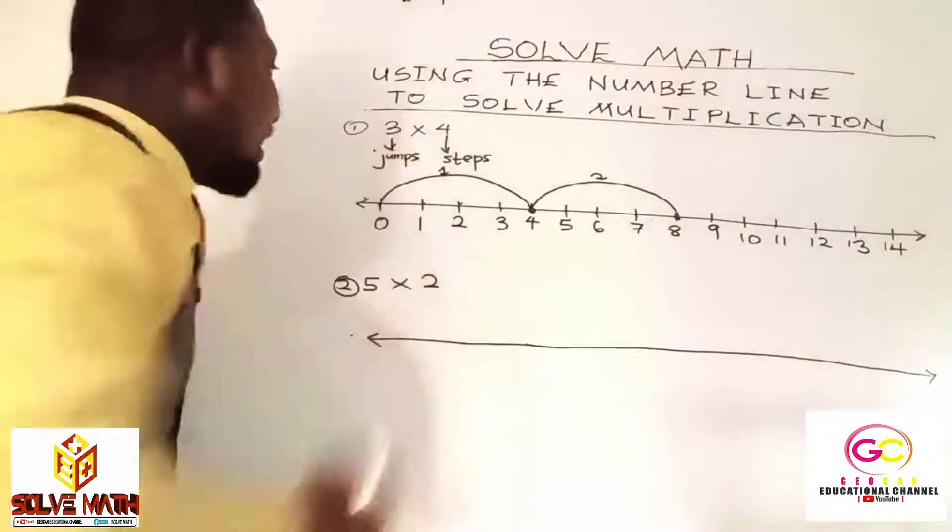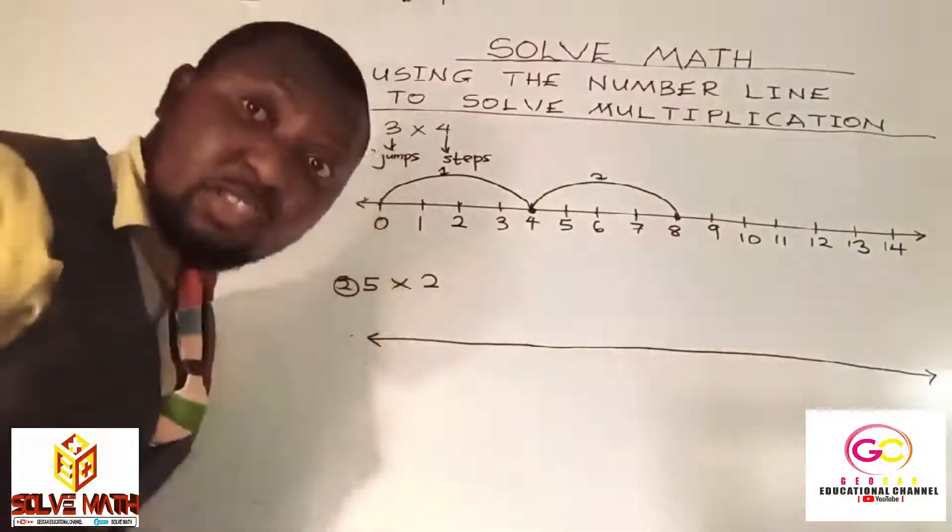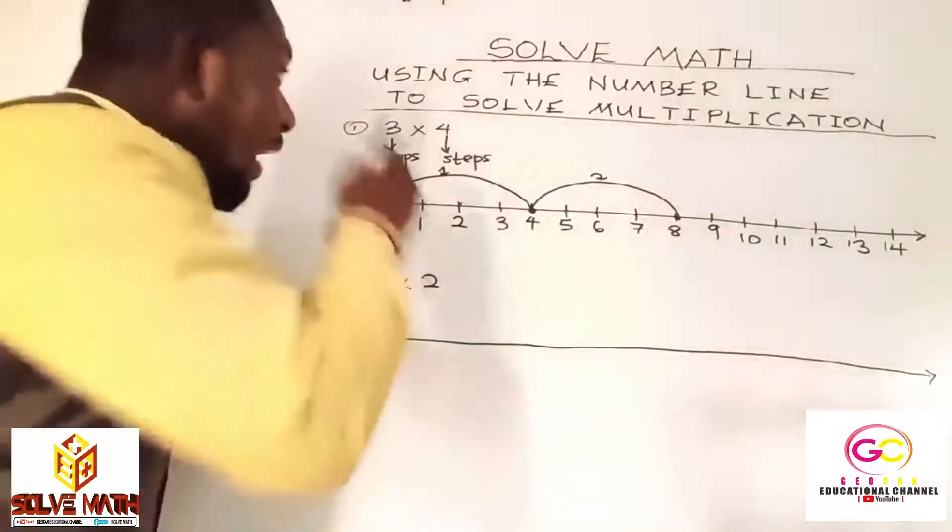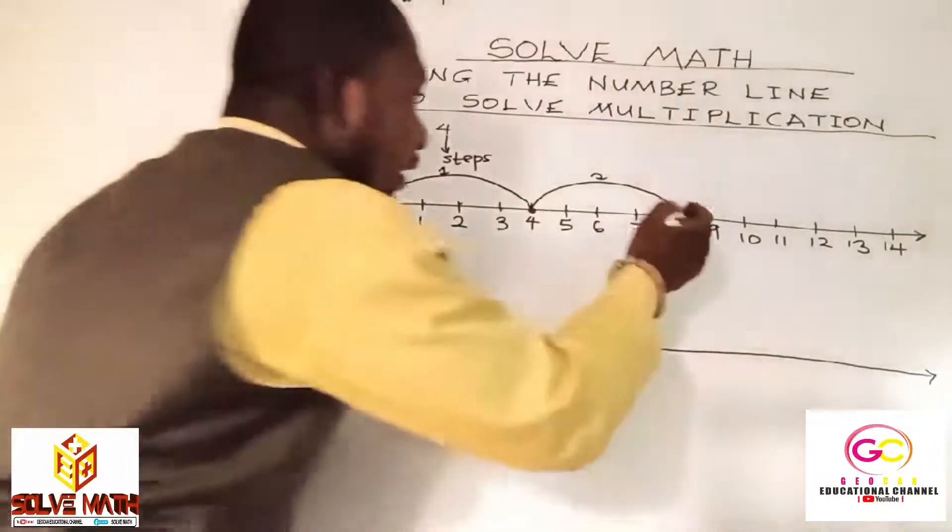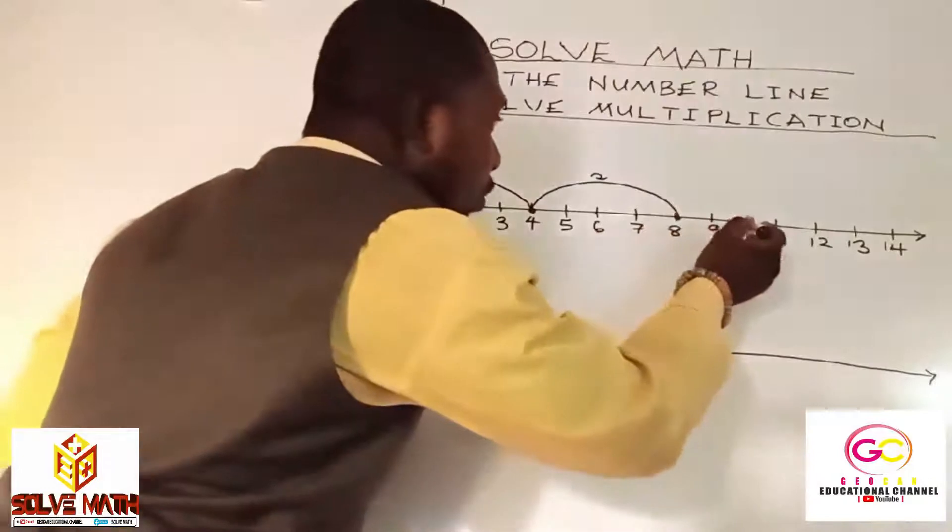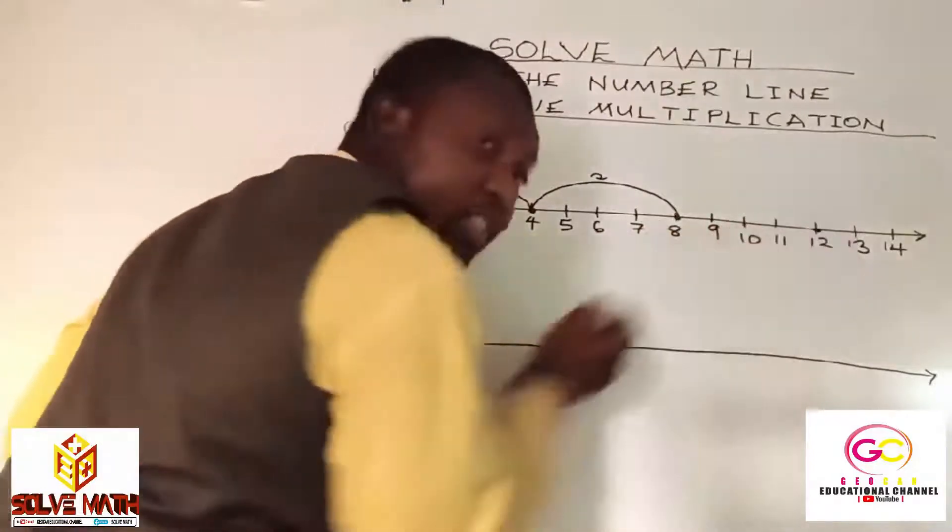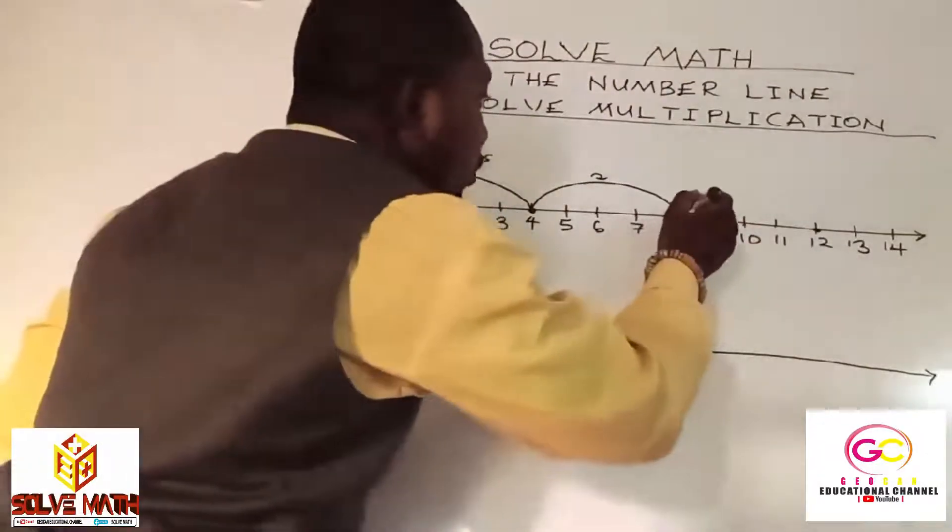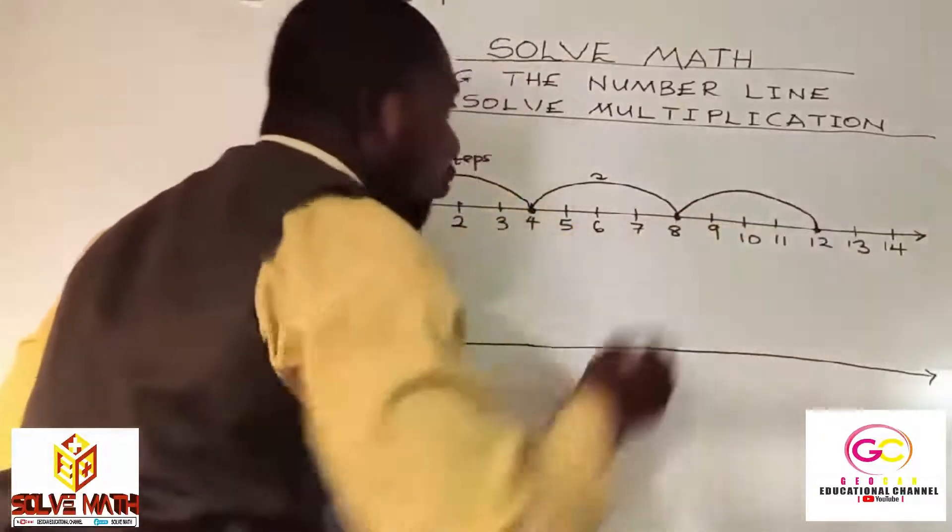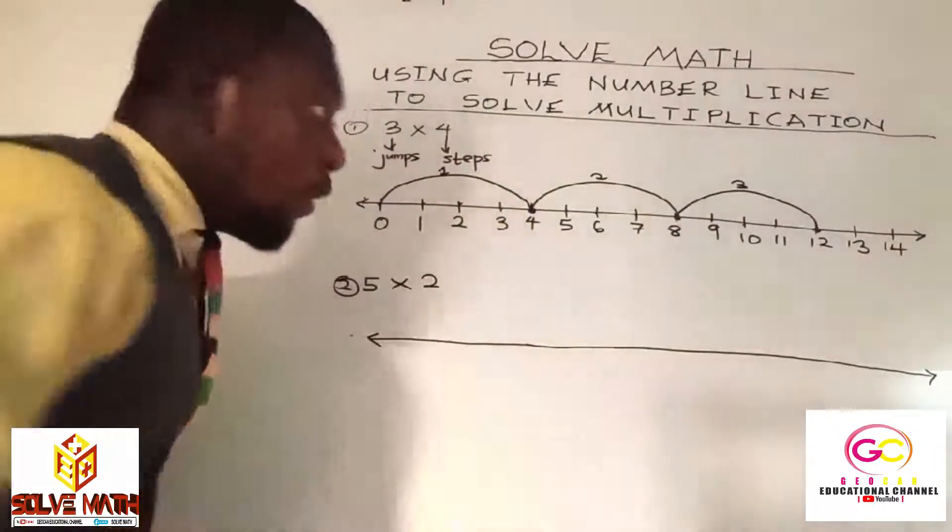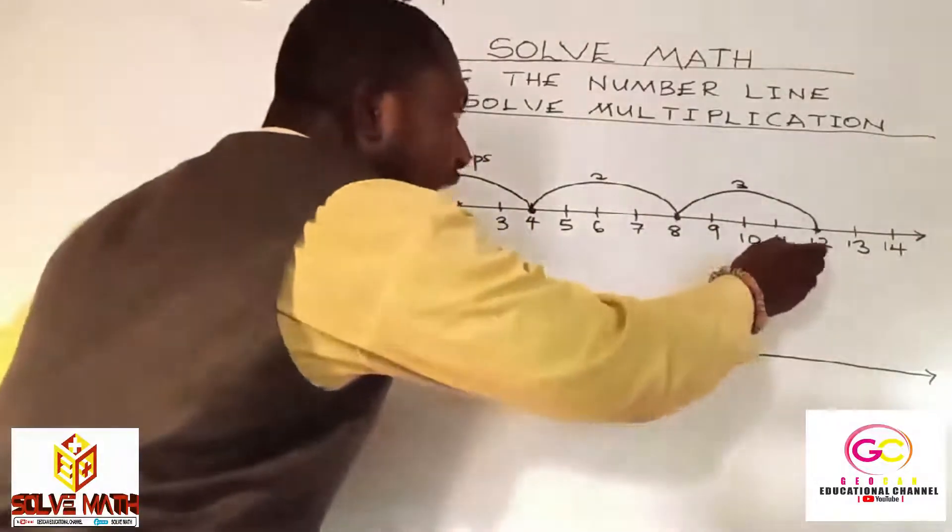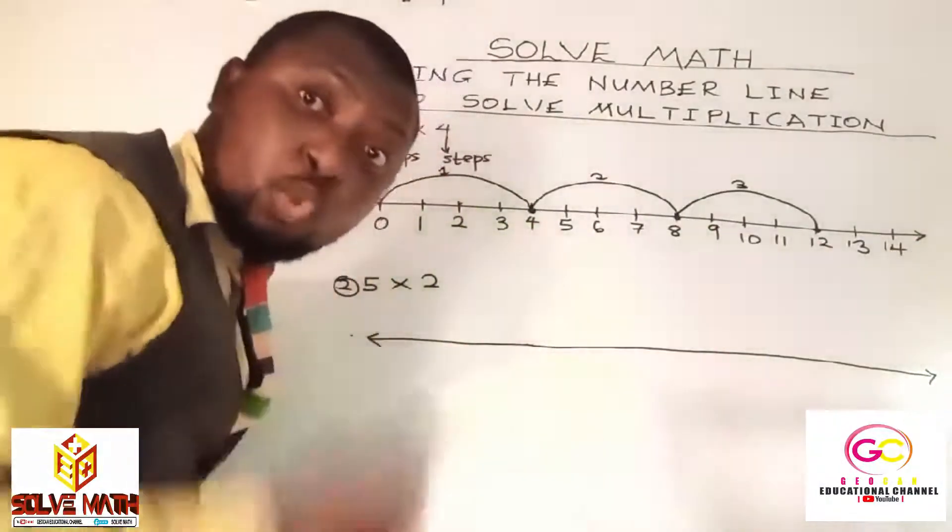I hope you got it. Let's move to our third jump because it's three jumps. We are left to our third jump. And remember, in each jump, how many steps? Four steps. So, let's count our steps. One, two, three, four. Punch there and draw your arc to meet the dots. And label it three. So, this is your third jump. Where did you land on? We landed on the number twelve.